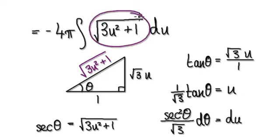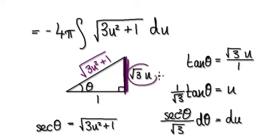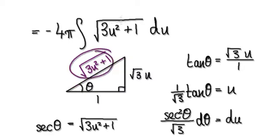To integrate this, set up your triangle in such a way that this will make sense. Set the opposite to be √3 times u, set the adjacent to be 1, then the hypotenuse will be √(3u²+1). Notice that this is exactly the same as this.